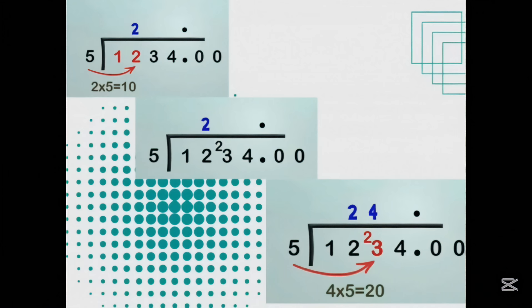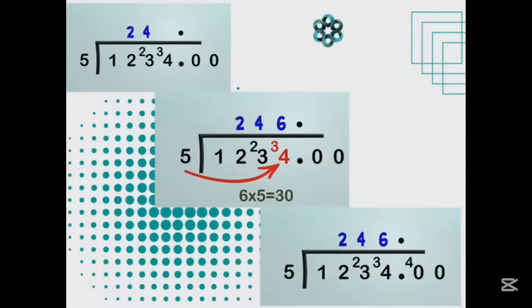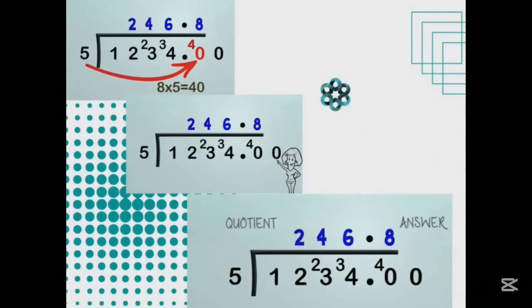Now I am ready for the calculation. First question: how many 5s in 12? Two 5s are 10 — that's a remainder of 2. How many 5s in 23? Four 5s are 20 — remainder 3. How many 5s in 34? Six 5s are 30 — remainder 4. In short division the remainder goes right in front of the next digit. How many 5s in 40? Eight 5s are 40. Put the 8 on the answer line. There is no remainder this time so we don't need the extra zero. We have our quotient — the answer is 246.8.